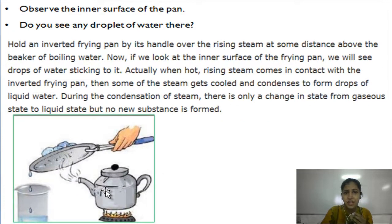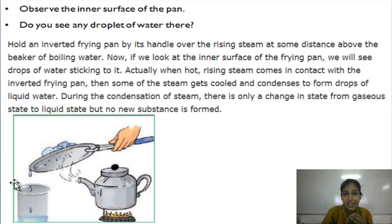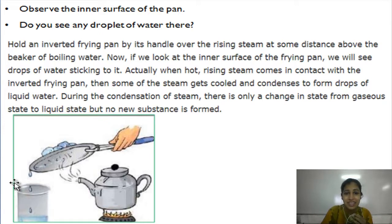In this activity, you have to hold the inverted frying pan by its handle over the rising steam at some distance above the beaker of boiling water. Observe the inner surface of the pan. Do you see any droplets of water? If we look at the inner surface of the frying pan, we will see drops of water sticking to it.